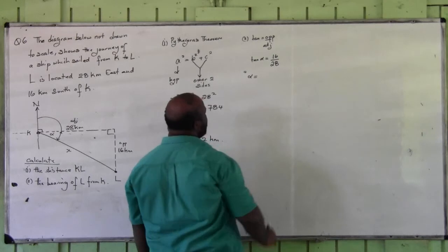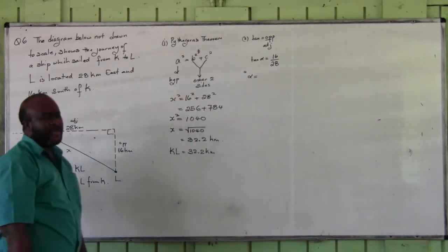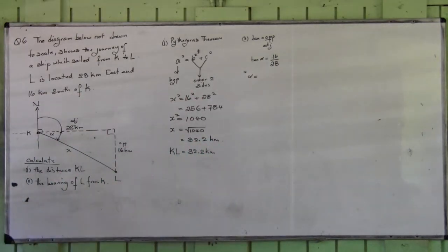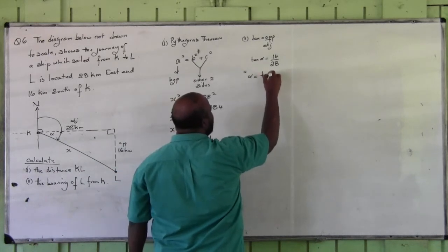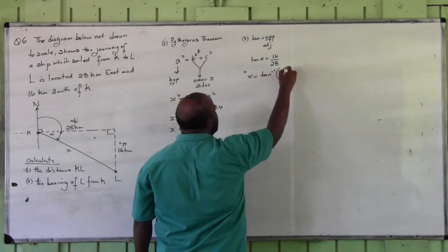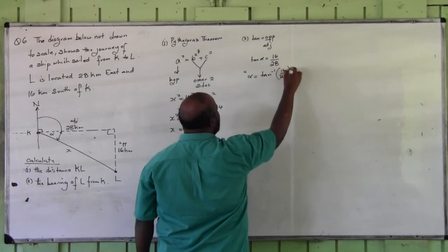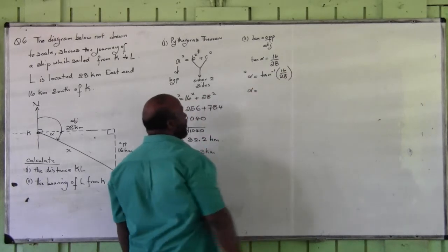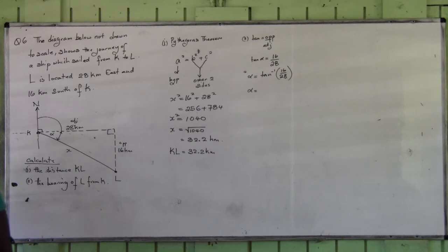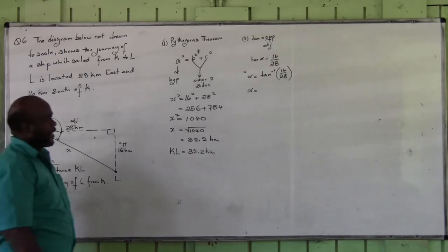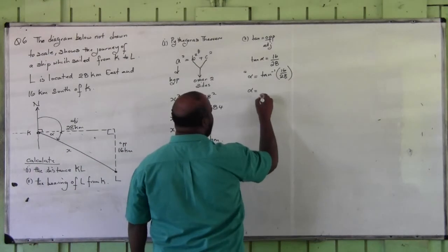Then I'm going to say the tangent of alpha is equal to opposite 16 over adjacent 28. Alpha is equal to... So ladies and gentlemen, if you know the tangent of an angle, to find the angle you must use tan inverse. So alpha is equal to tan inverse 16 over 28. Using calculator, 29.74.